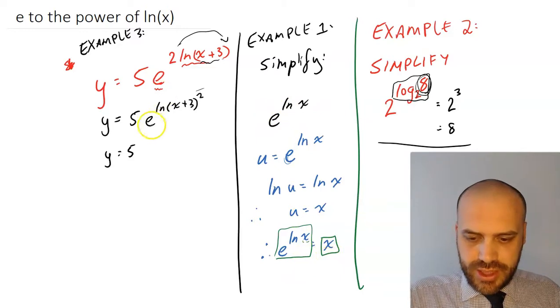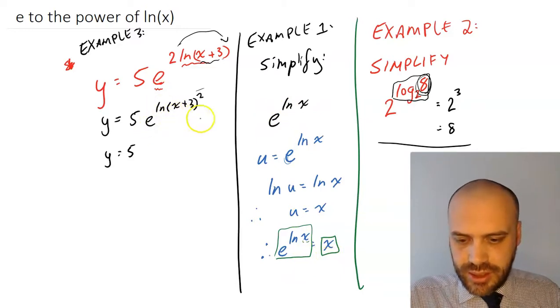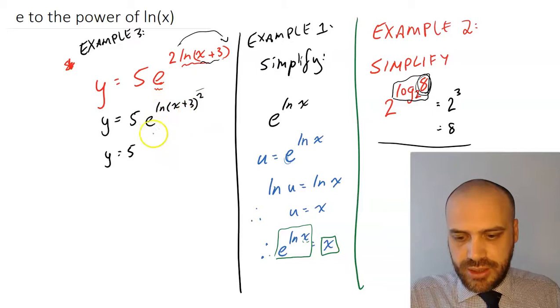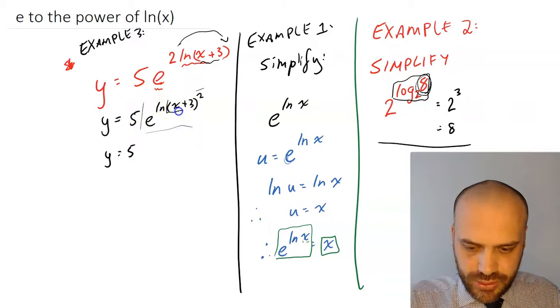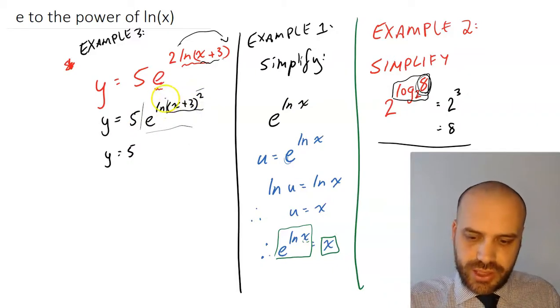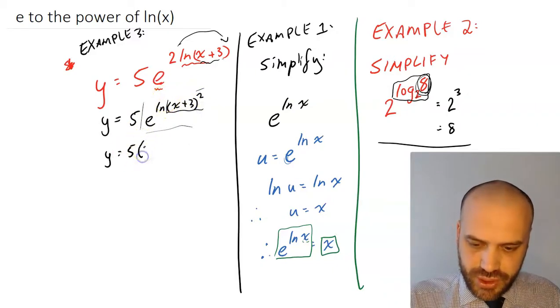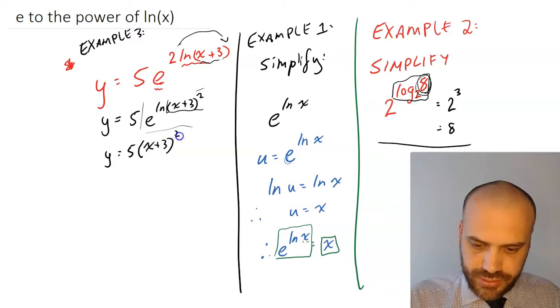e to the ln x equals just plain old x. Which in this example, e to the ln x plus 3 squared means that all of this is just going to be equal to this bit right here.